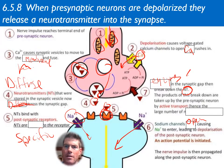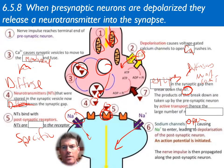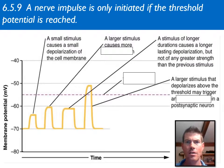Enzymes in the synaptic gap break down the neurotransmitter — like we saw with Parkinson's disease. MAO and COMT are enzymes that break down these neurotransmitters. That process takes a lot of energy, which is why you see many mitochondria in these cells.